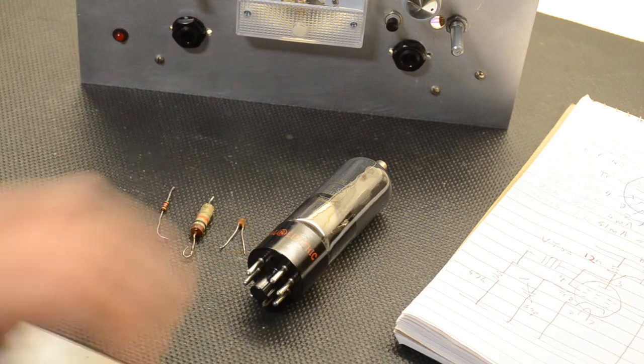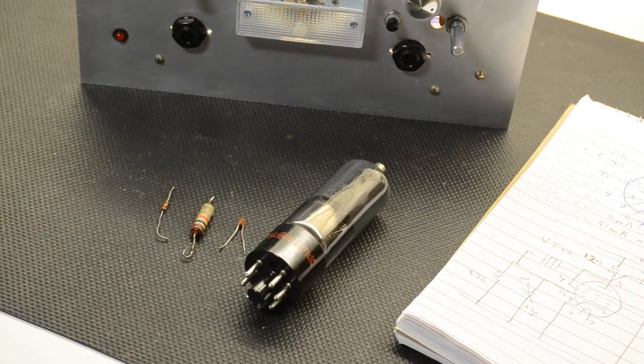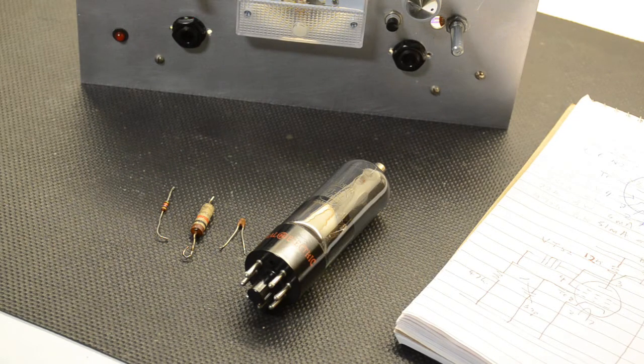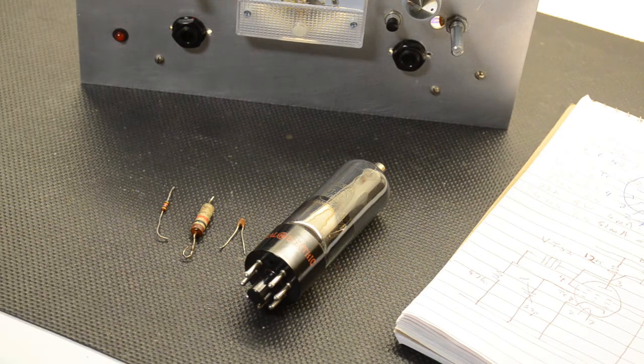Interesting enough going back to the valve, this is something you don't usually use for a crystal oscillator. It's a VT52, it's a little bit obscure in some ways, but it's an output pentode.